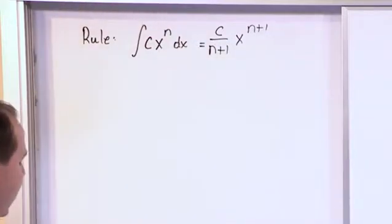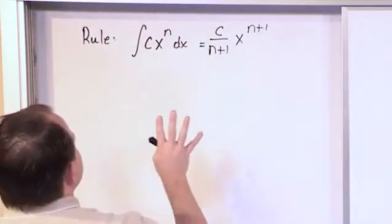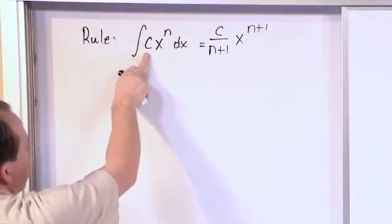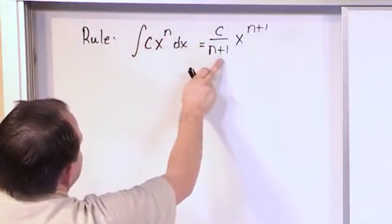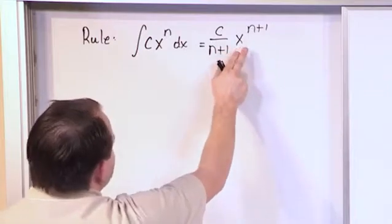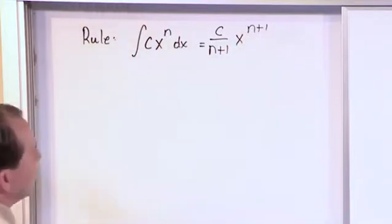We'll talk about the constant of integration when we do actual problems. So all you do in this case is you take the number that's outside, you divide it by 1 plus the exponent, and then you take x and you raise it again to 1 plus the exponent.